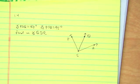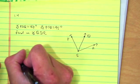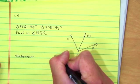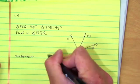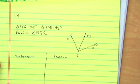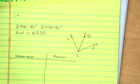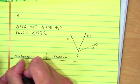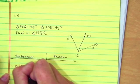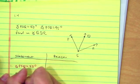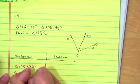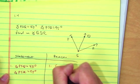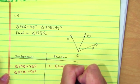Now we're going to put this in a two-column proof: statement and reason. Let's write down the given information. So I just have angle PSQ equals 40 degrees, and also angle PSR is equal to 95 degrees. We call that given information.